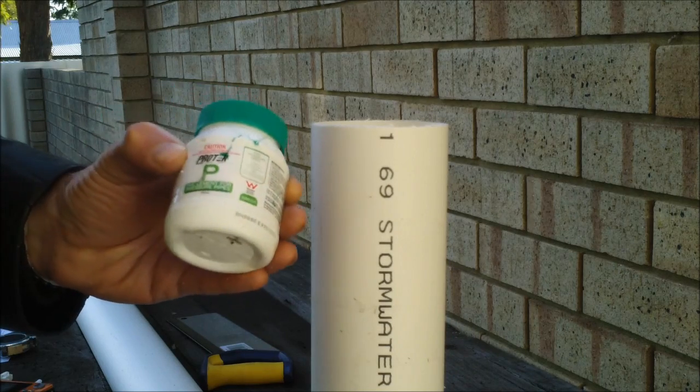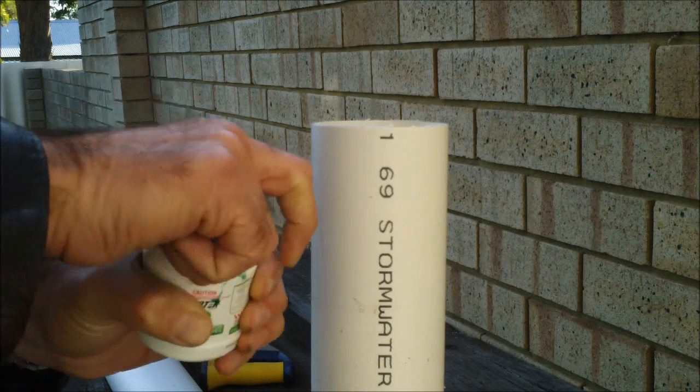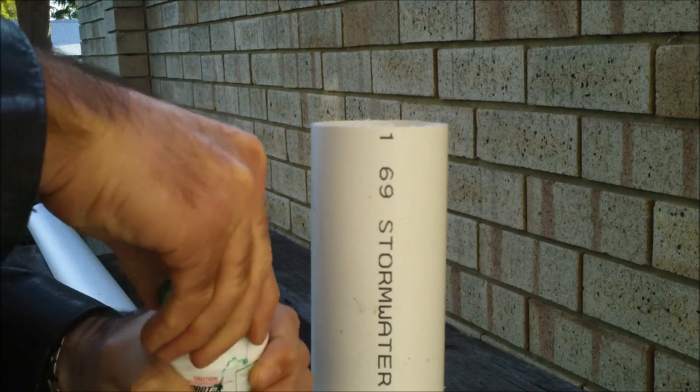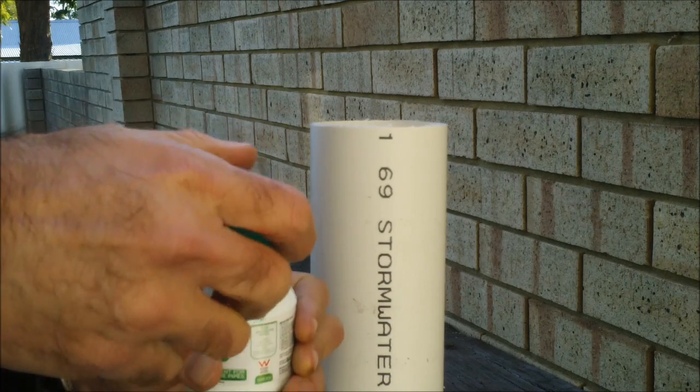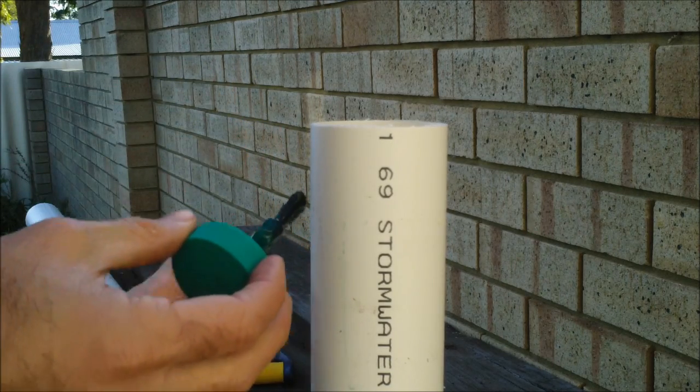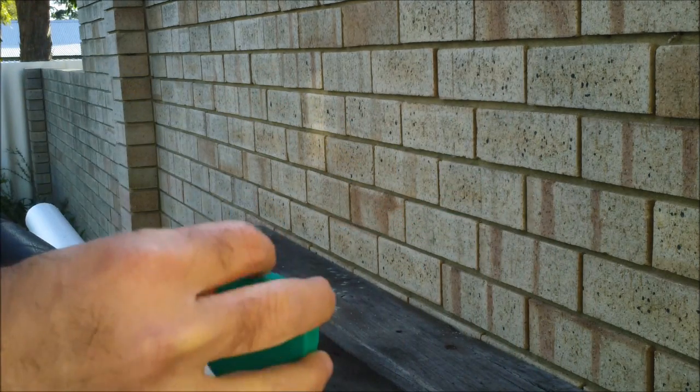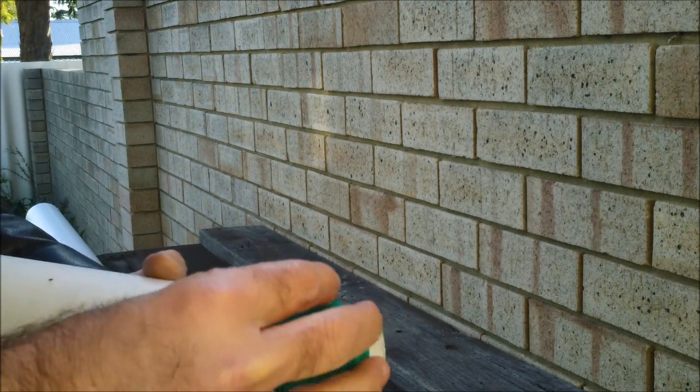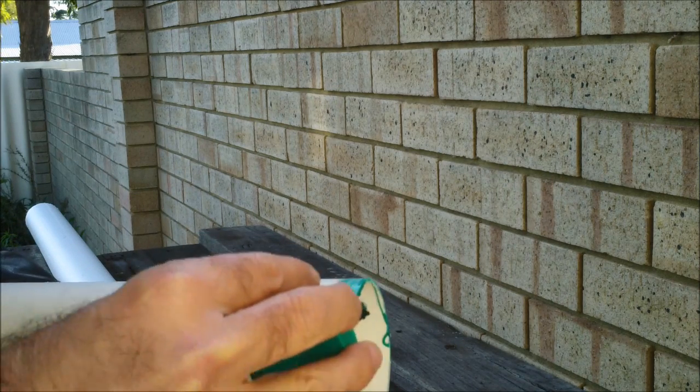Time to do the gluing now. Now this is just ordinary PVC cement like you'd use for reticulation. And in the cap, there's a brush. Just going to run some glue around the end of the pipe. Perfect.